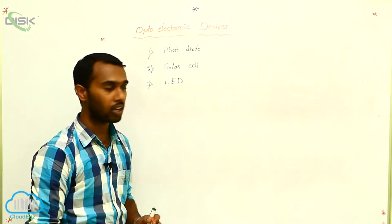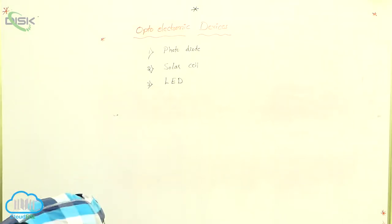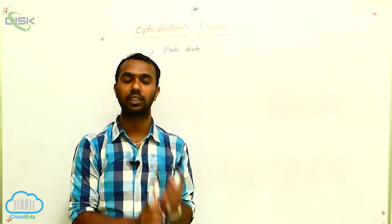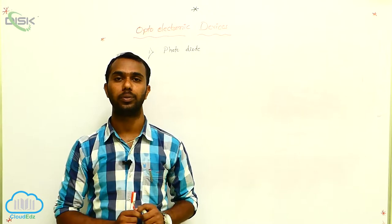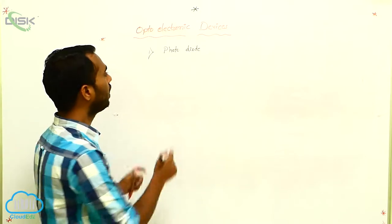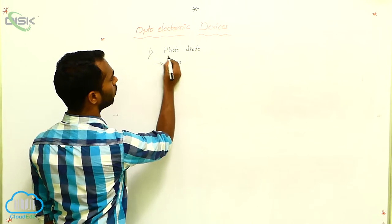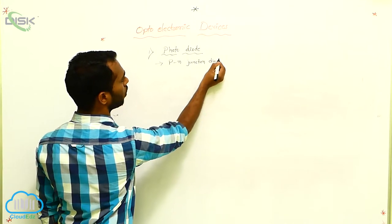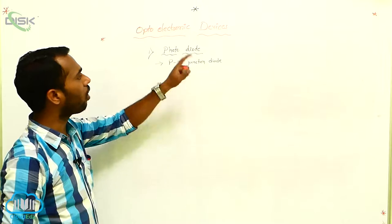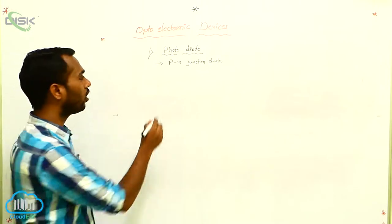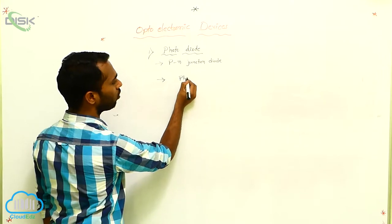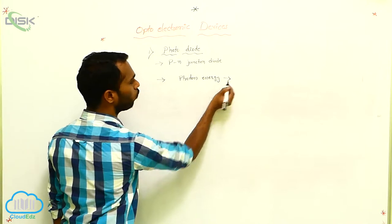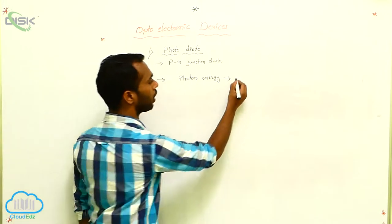First one is a photodiode — very simple. Photodiode is nothing but a P-N junction diode. What is the work of photodiode? Photo means photon energy. It converts photon energy into electrical energy.